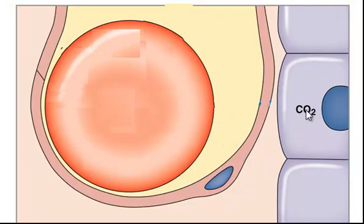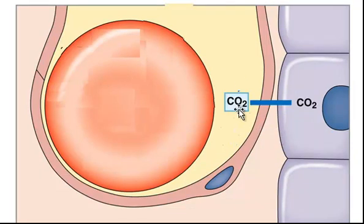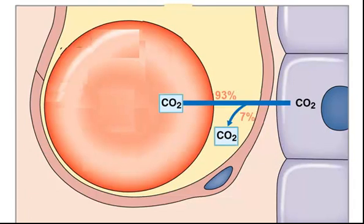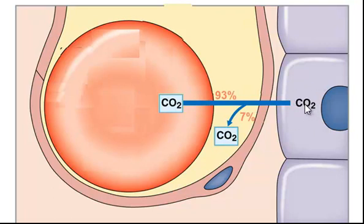Once carbon dioxide is produced in the cell, it will diffuse from the cell into the interstitial fluid, and from the interstitial fluid it will enter the capillary. Inside the capillary, about seven percent will stay dissolved in the plasma, and about 93 percent will enter the red blood cells.